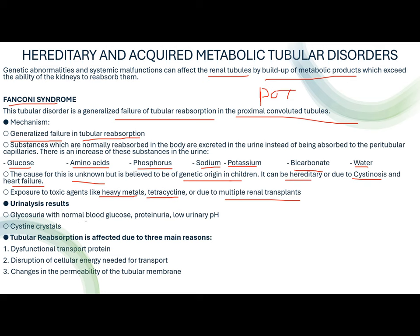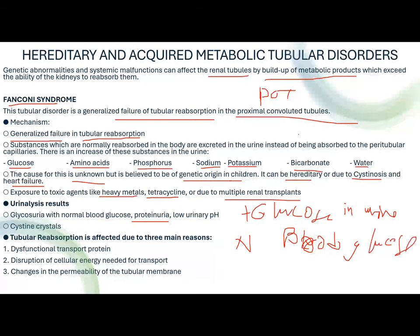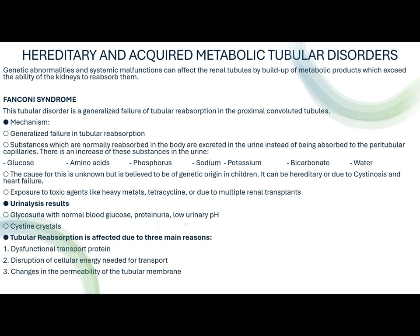Urinalysis for Fanconi syndrome shows glycosuria with normal blood glucose, proteinuria, low urinary pH, and visible cysteine crystals. The key feature is being positive for glucose in the urine but with normal blood glucose levels. Tubular reabsorption is affected due to three main reasons: dysfunctional transport protein, disruption of cellular energy needed for transport, and changes in the permeability of the tubular membrane.